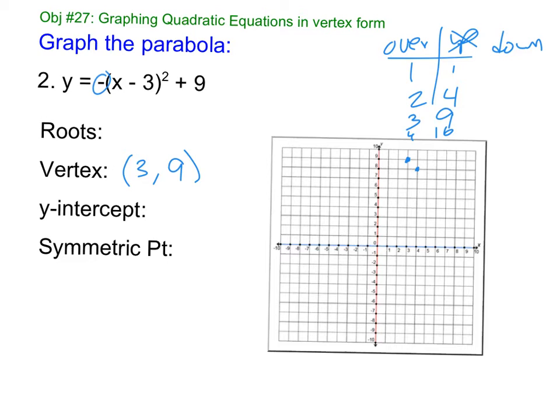So over 1, down 1. Over 2, down 4. Over 3, down 9. Over 4, down 16. That's 9, 10, 11, 12, 13, 14, 15, 16.